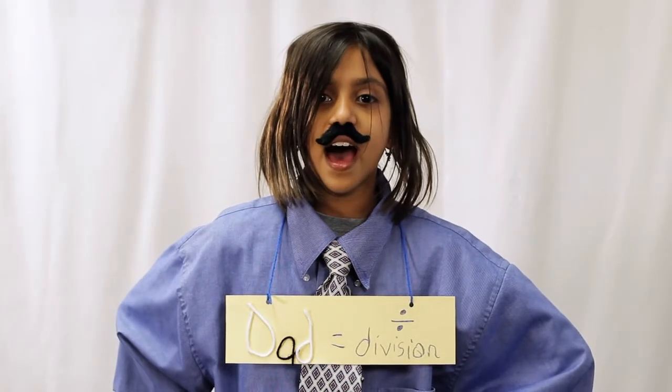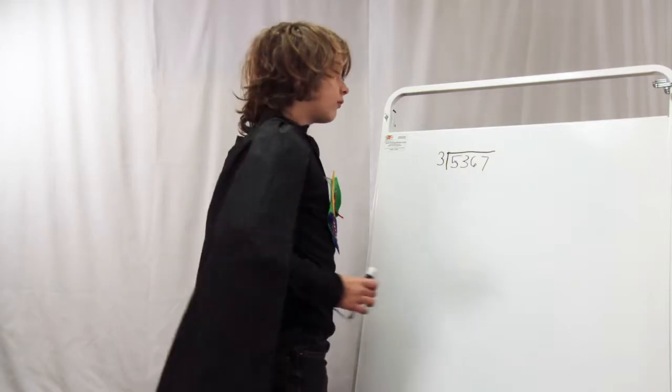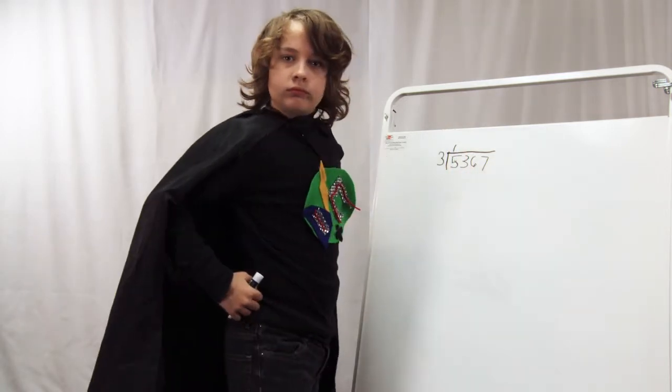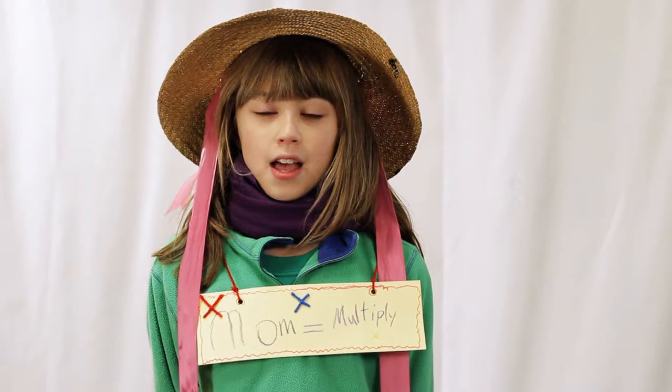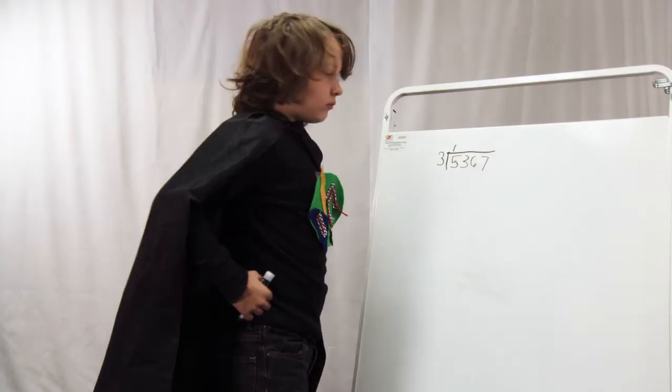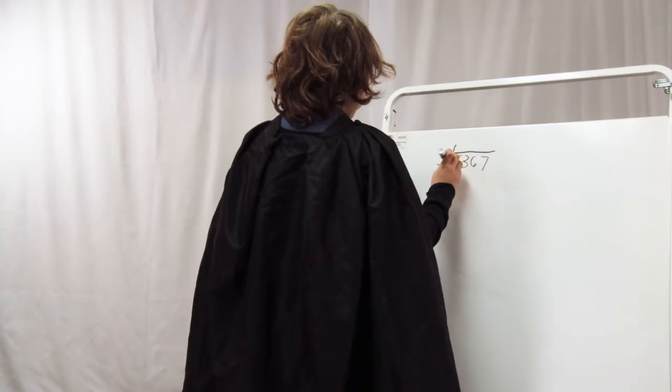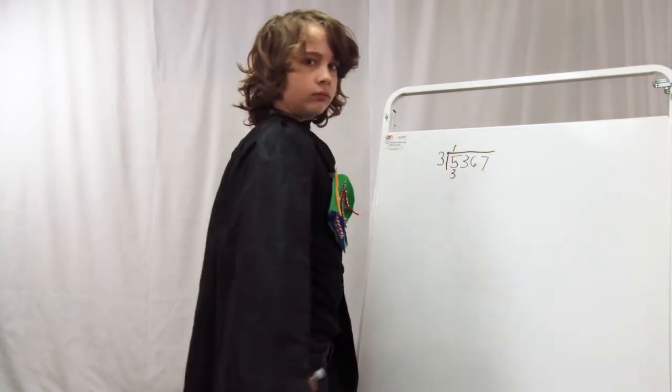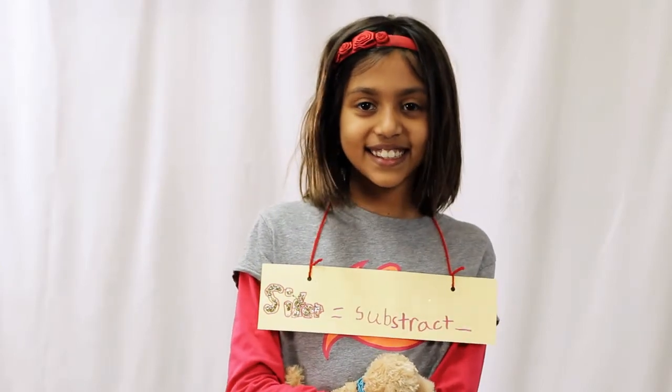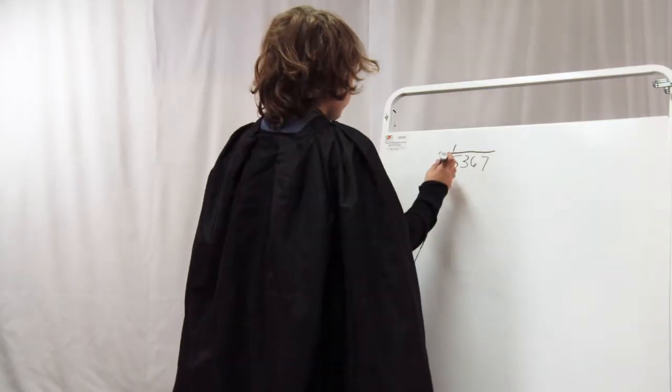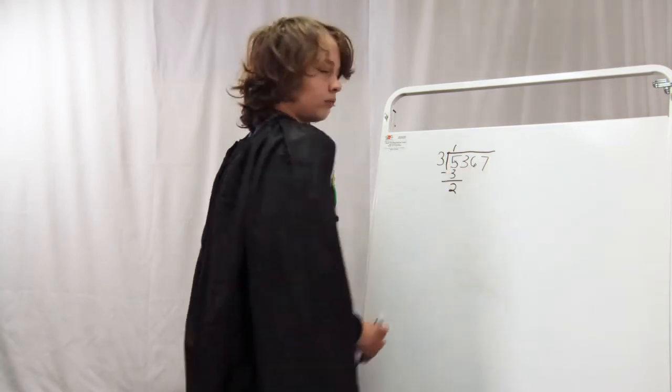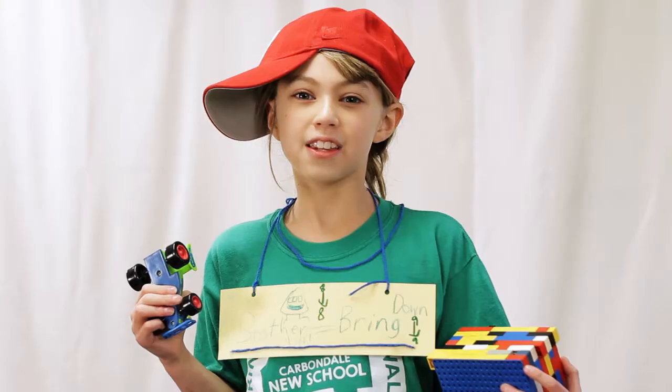First we divide. Three goes into five one time. Now we multiply. Three times one is three. Now we subtract! Five minus three is two.